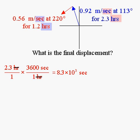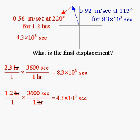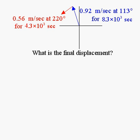Now let's convert the other time: 1.2 hours times 3,600 seconds per hour. The hours cancel, and we're left with 4.3 times 10 to the 3rd seconds. So we replace 1.2 hours with 4.3 times 10 to the 3rd seconds, and 2.3 hours with 8.3 times 10 to the 3rd seconds.